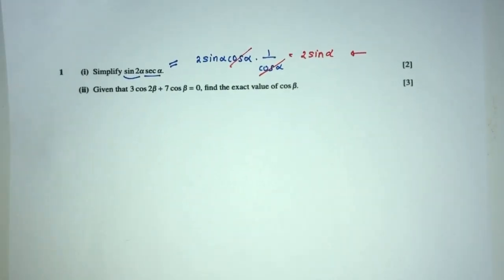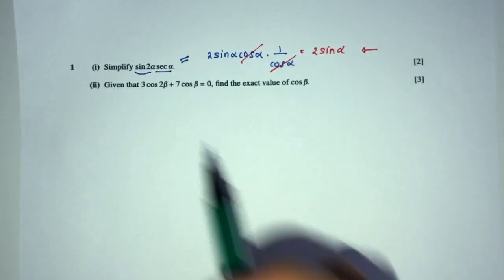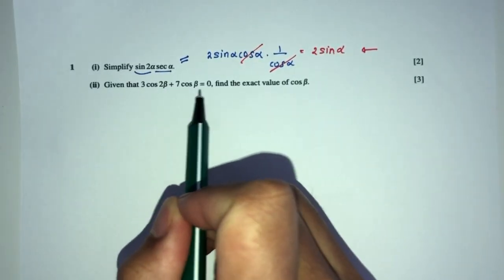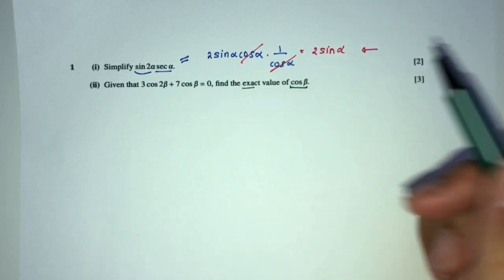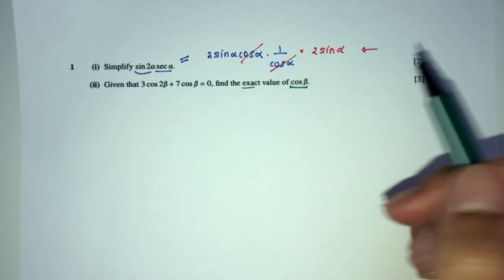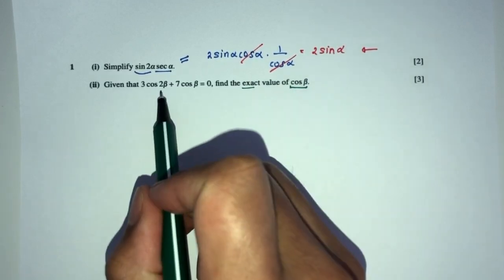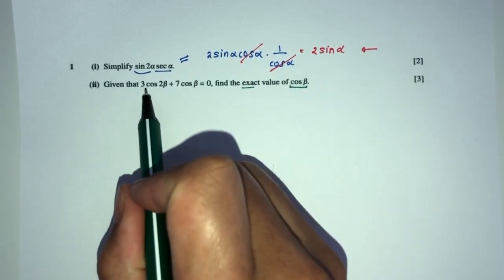Now for part 2, given that we have this thing plus this thing is this one, find the exact value of cos β. Alright, let's do this. We need to find cos β, but here we have cos 2β. So let's break this down.